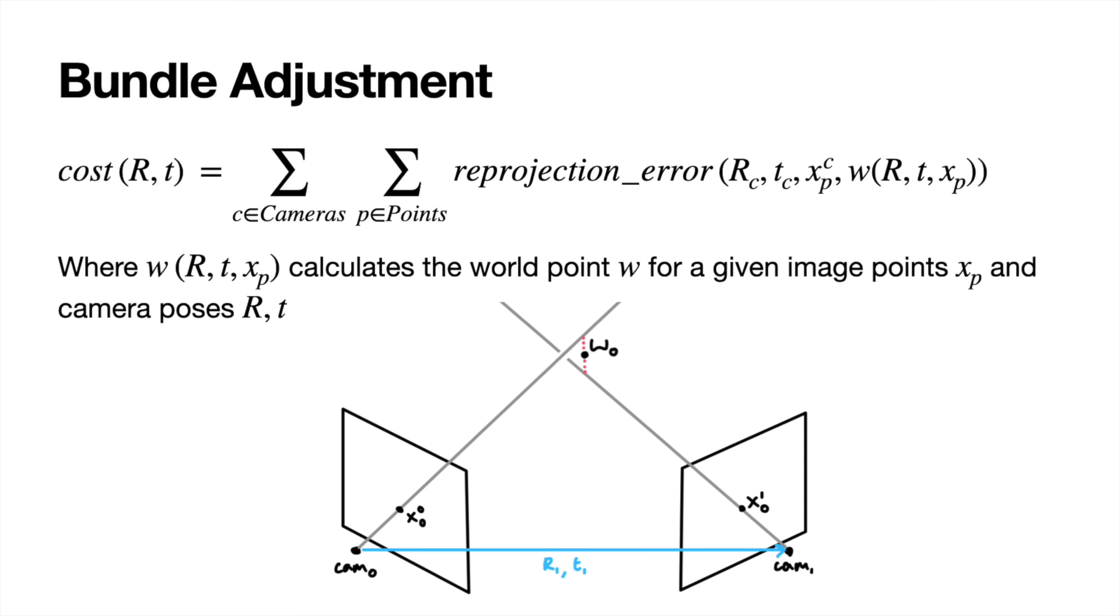Perhaps the coolest part of the camera pose calculation process is something called bundle adjustment. So, the epipolar geometry camera pose calculation only gives you a rough estimate of where the cameras are. It could be off by a couple centimeters. This is manifested in something called a reprojection error.